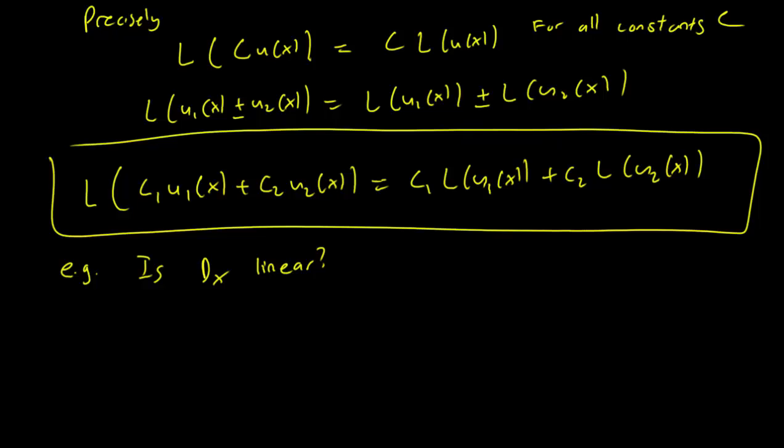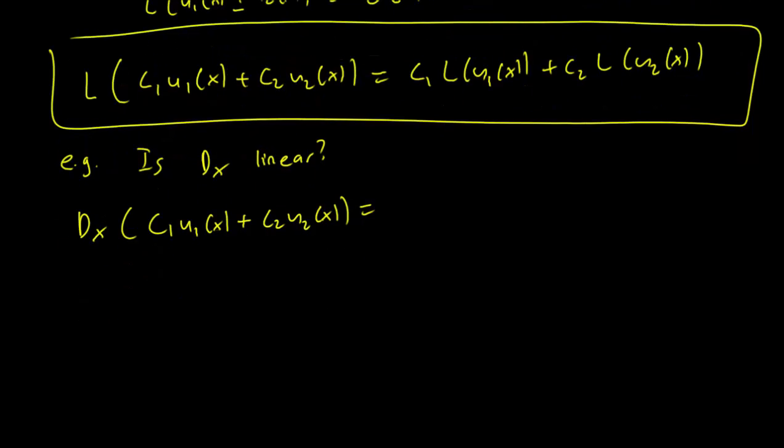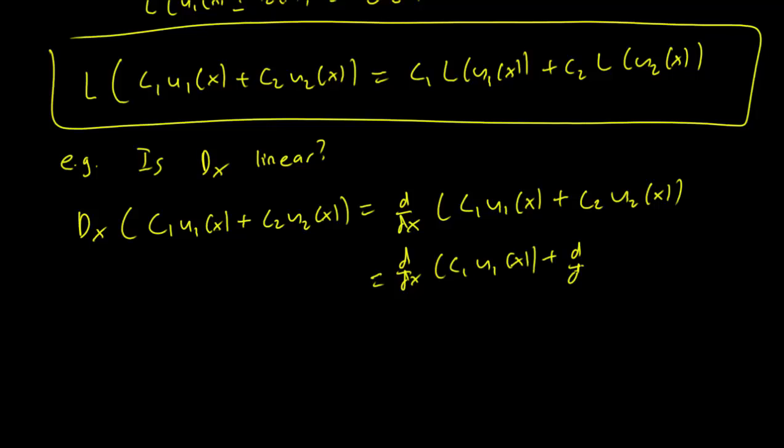So let's see if it is. Now dx of c1*u1(x) plus c2*u2(x) is equal to, and what's dx again? dx is a derivative. So it's a derivative of c1*u1(x) plus c2*u2(x). Now remember that the derivative does behave nicely with respect to addition, so you can just pull it out this way. dx of c1*u1(x) plus dx of c2*u2(x).